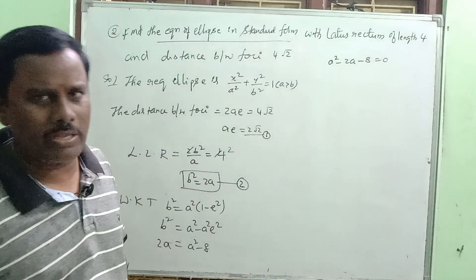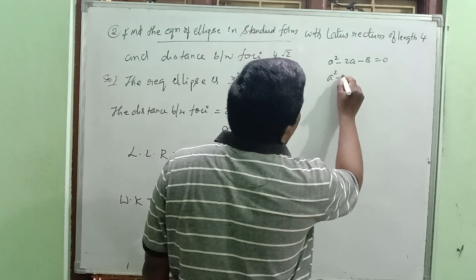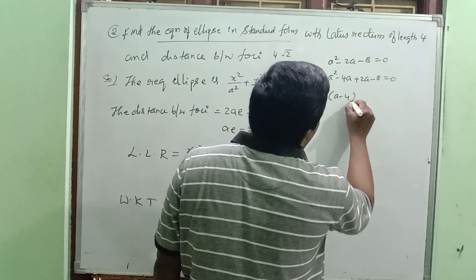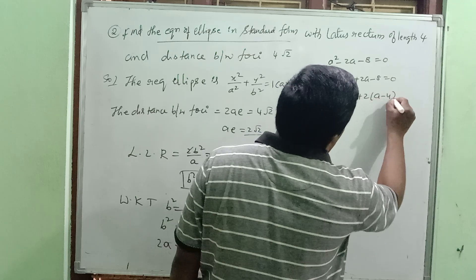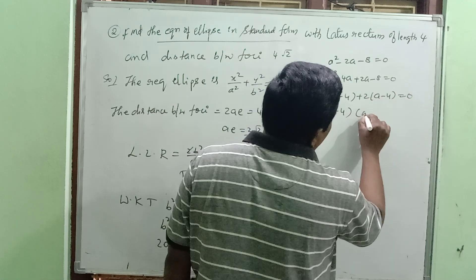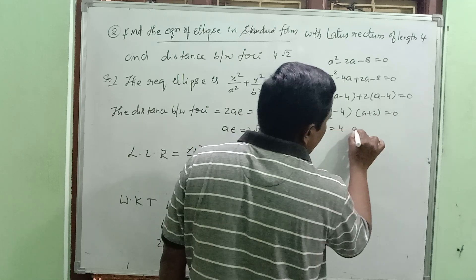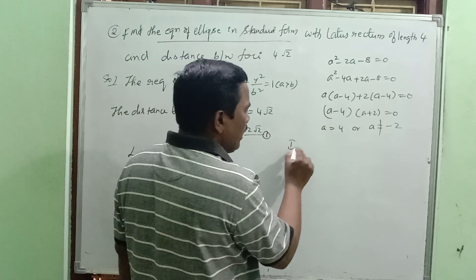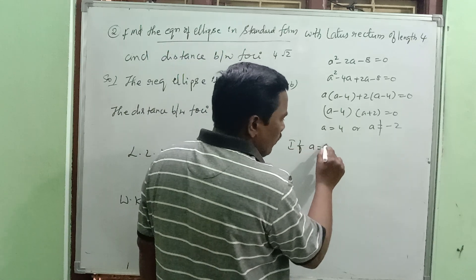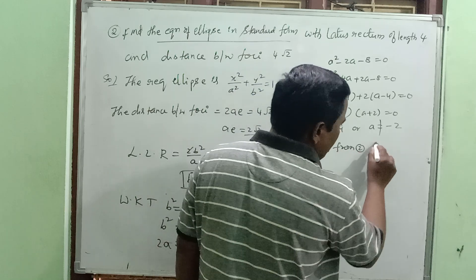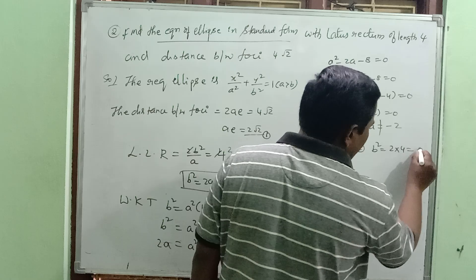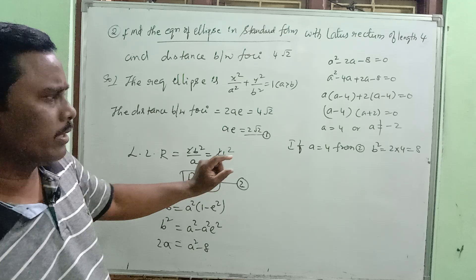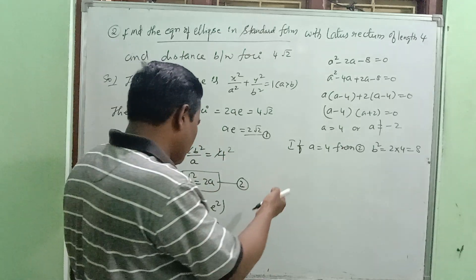Factoring a² - 2a - 8 = 0: (a - 4)(a + 2) = 0, so a = 4 or a = -2. Since a must be positive, a = 4. Then b² = 2 × 4 = 8. The required ellipse is x²/16 + y²/8 = 1.